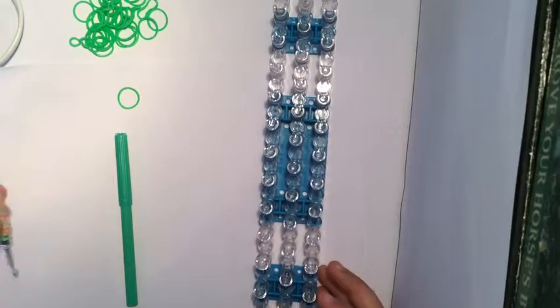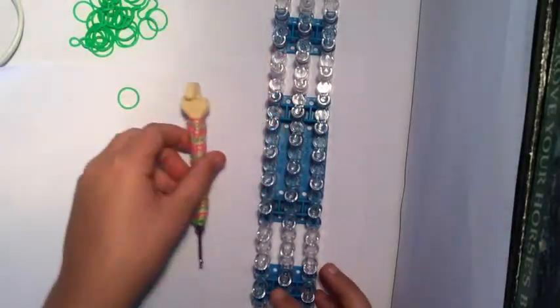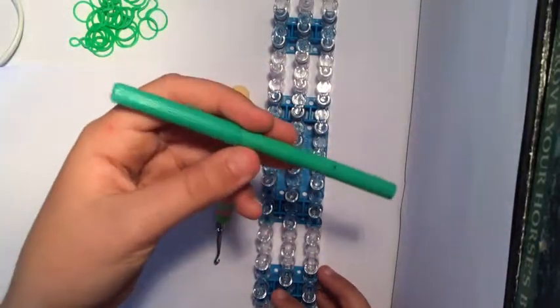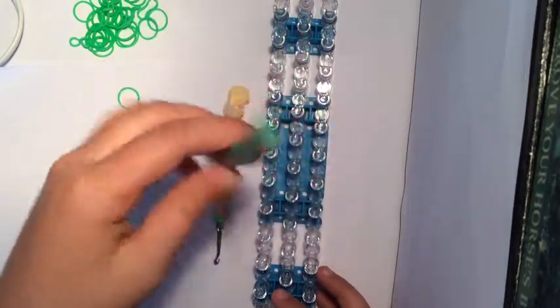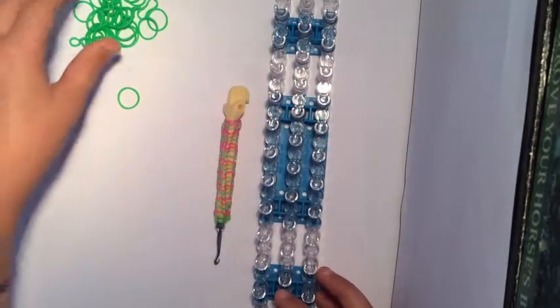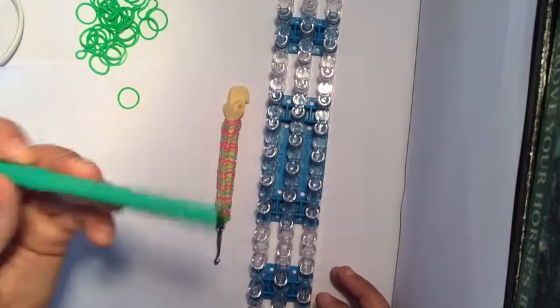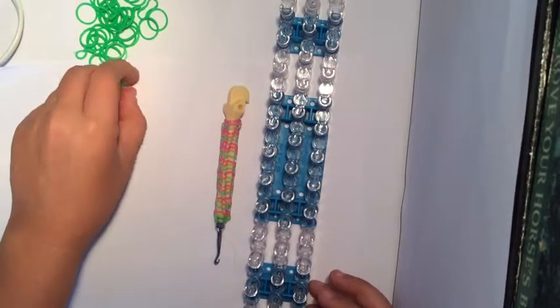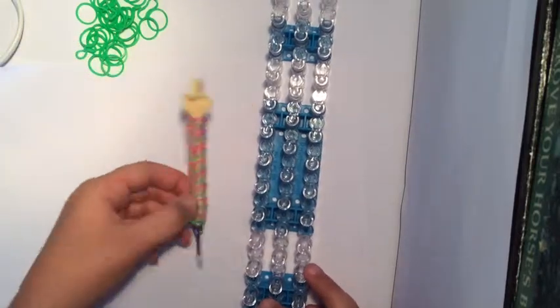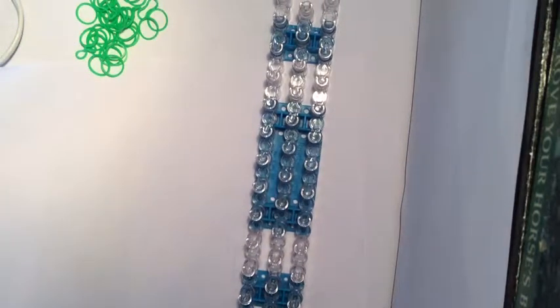To do this I'm going to be using my hook. I'm going to need this when I'm finished making the cover to slide it on. I'm using bands the color of the felt tip, so obviously green bands, and let's get started on this tutorial.